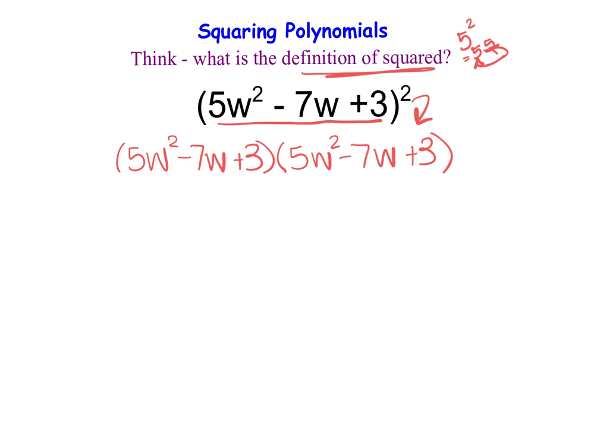Because now from here, what we can see is this is just a really big multiplication problem. We're going to take everything in this first parenthesis here and we're going to multiply it by everything in the second parenthesis.